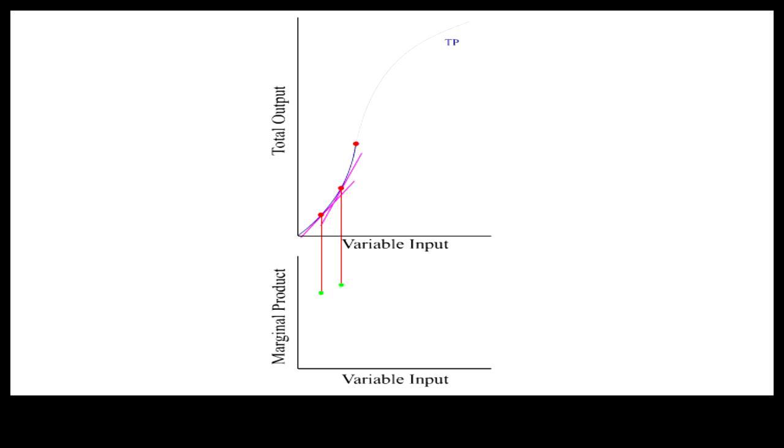Rising marginal product means each additional worker adds more to the total product than the one before. Therefore, this increasing returns results from dividing labor among the workers, a variable input, and reducing the downtime of the stapler, a fixed input.